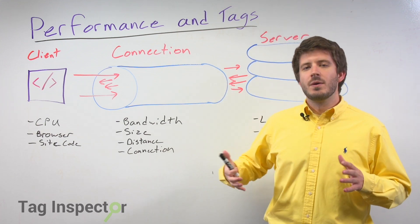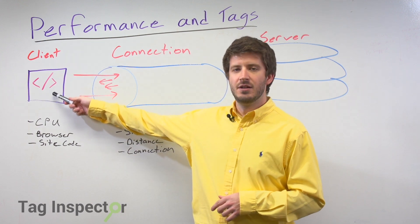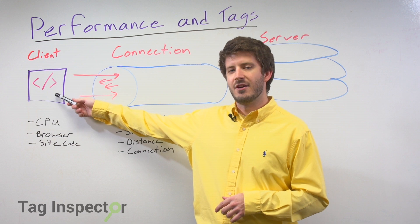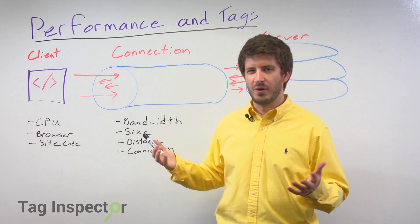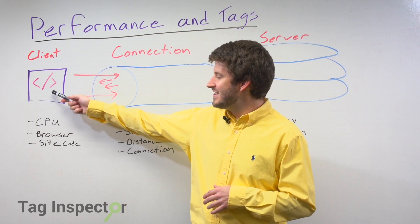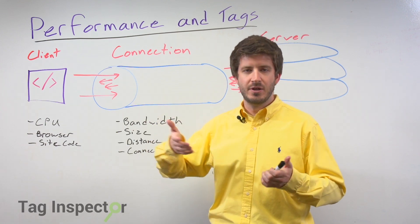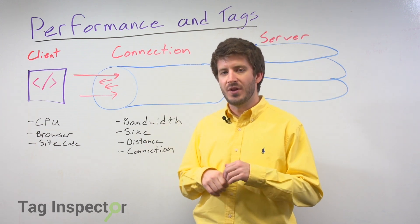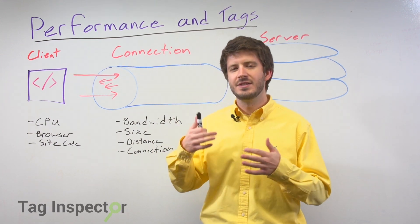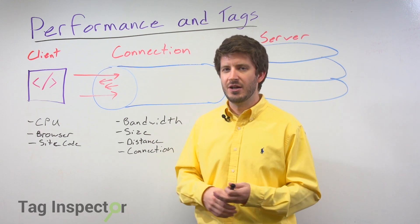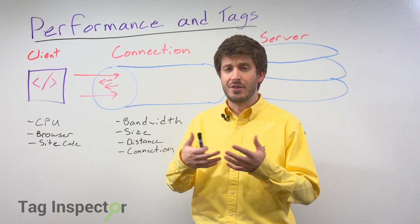When it comes to how your website is working and how those tags are working, there are really three main components. The first is the client, which is the actual user's browser — whatever it is they're accessing your website with. The browser, whether Google Chrome, Firefox, or Safari, is playing a key role: it gets the code from your site's server, parses through all of that code, and then requests and pulls down all the content — text, formatting, styling, photos, videos — and renders it to show to your user.